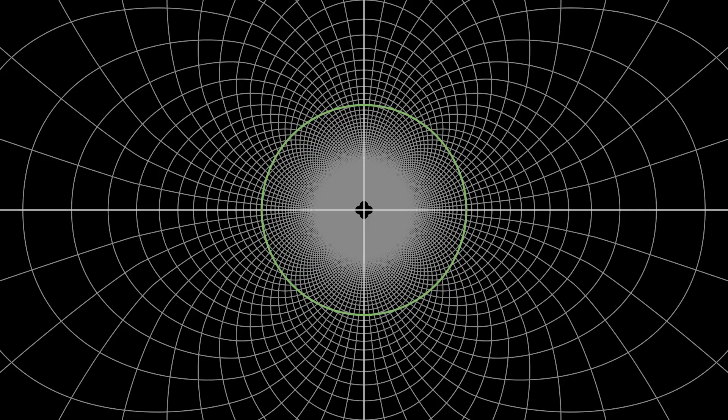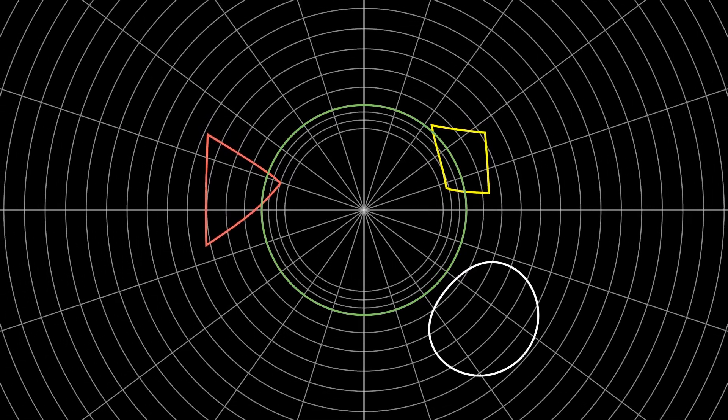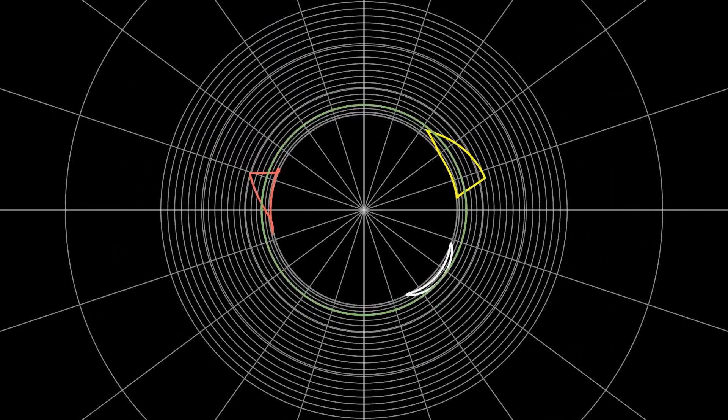It's a little bit easier to see in polar coordinates. Look at how the circles inside the green circle are being mapped to the outside and vice versa. Here are some shapes for reference. You'll notice that all of the shapes are being distorted under this transformation, except for the circle, which only changes size.